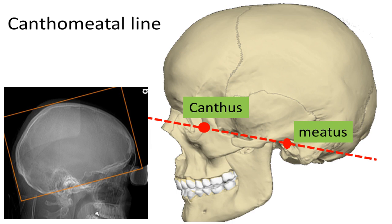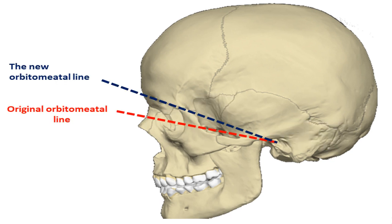There is a big disadvantage of this line. When the scout of CT is taken along the cantho-meatal line, a large dose of X-ray will be delivered to the lens of the eye, which is hazardous. This is the reason why there is a modification of this line. The anterior point was transferred to the upper border of the orbit instead of the canthus, so that the lens can be protected from the high dose, and therefore the line is called the new orbito-meatal line.